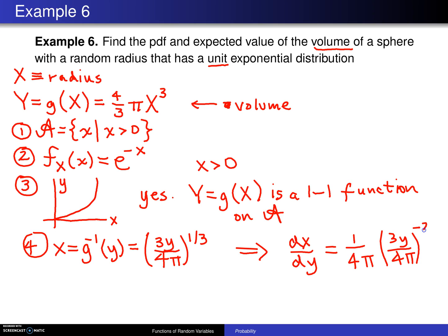Step five then is to find script B. Script B will be the support of the random variable Y. Well, if X has positive support when you cube it and multiply by four-thirds pi, that also has positive support. So script B will be the set of all y such that y is greater than zero.